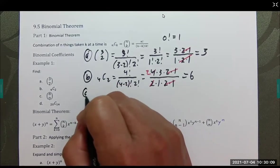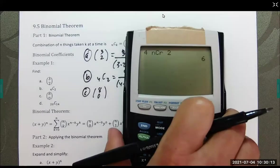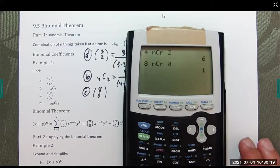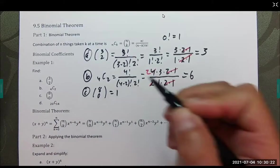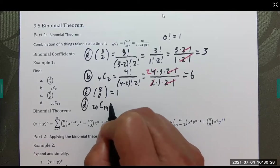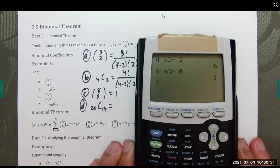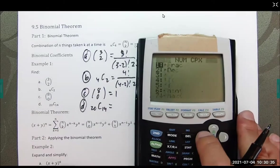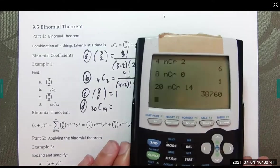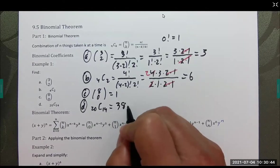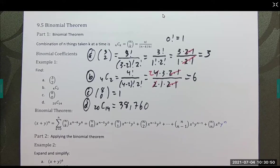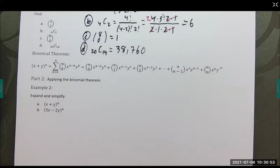So most scientific calculators will have it. Part C, 8 choose 0. So I'm going to go 8 choose 0. It's going to give me 1. And 20 choose 14. Let's see what we get. 20, 14. It's a big number, 38,760. So it's not hard to do. It's just we just need to know how to do it. And with that skill, we now have binomial theorem, which is really cool.